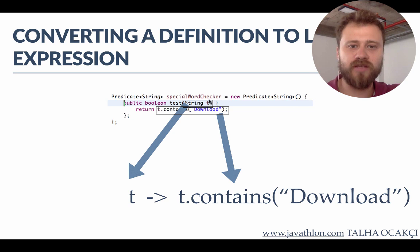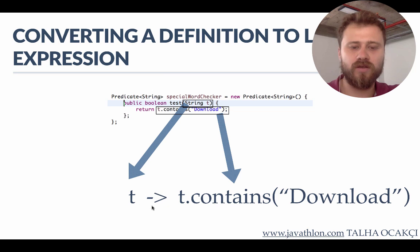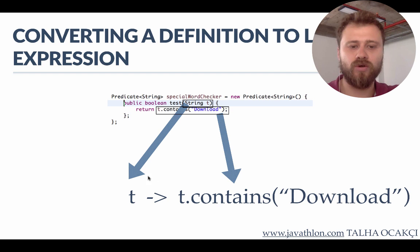We have some boilerplate code here. We are creating an anonymous inner class and inside it we are overriding the abstract method, and inside the abstract method we are returning a boolean — only the executed part is the actual logic. So we remove all the boilerplate code around this execution code and replace it with a lambda expression, where 't' corresponds to the input parameter.